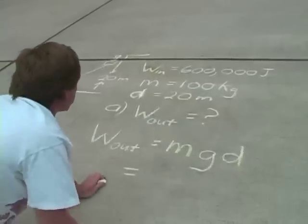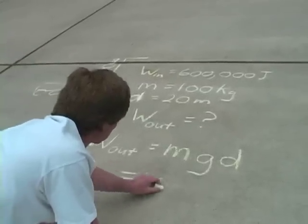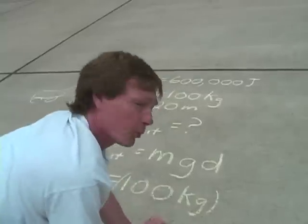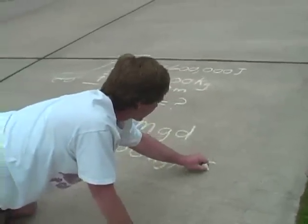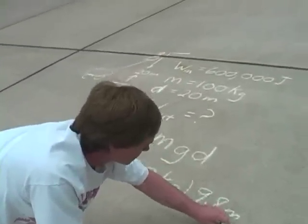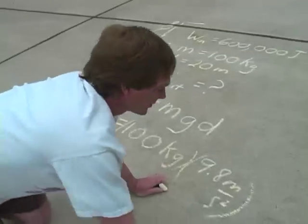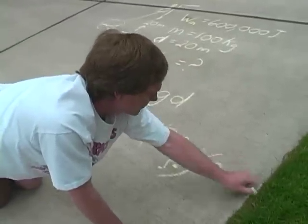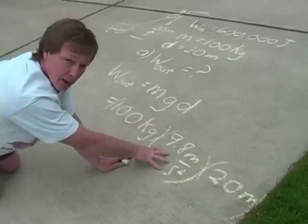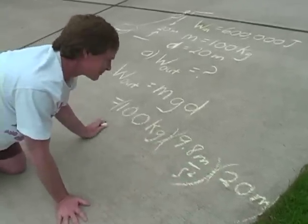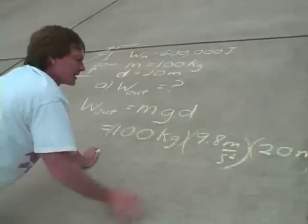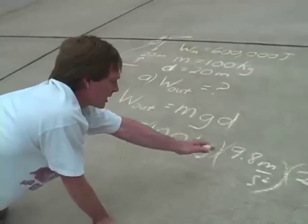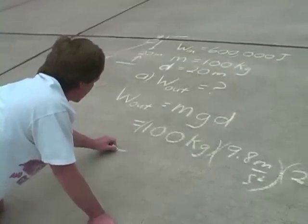Now I plug in the numbers. I've got 100 kilograms of mass. 9.8 meters per second squared is the acceleration of gravity at sea level. And I raise it a height, raise me a height, of 20 meters. So 100 kilograms is my mass. Gravity, 9.8 meters per second squared, 20 meters. Now, that's going to give me, let's see, 196,000, I think. Let's see. 20 times 9.8, that'll be 196, 1960, 19,000. That'll give me 19,600.